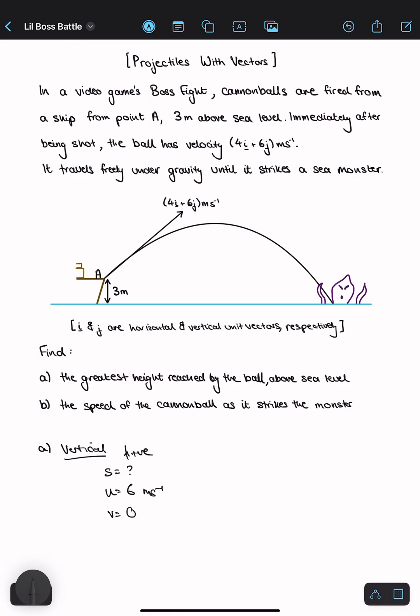The final velocity would be 0 because at greatest height, the velocity is equal to 0 temporarily. And the acceleration is negative 9.8 meters per second squared because I've taken upwards as positive.